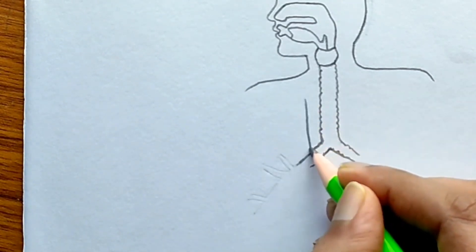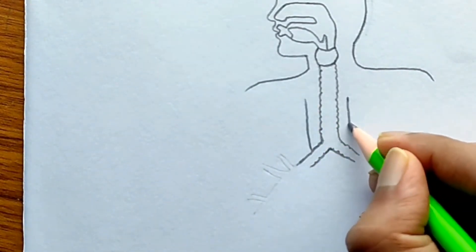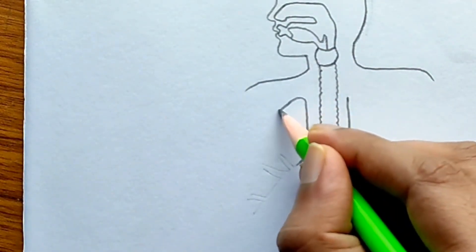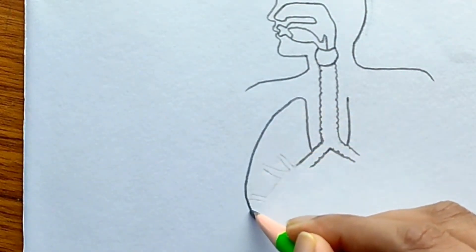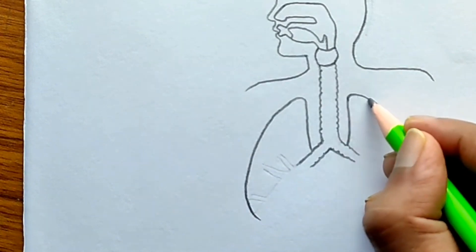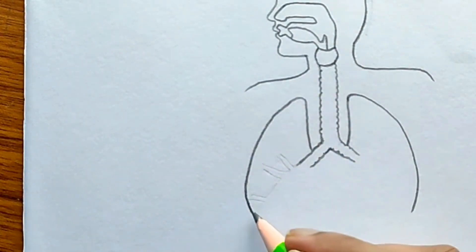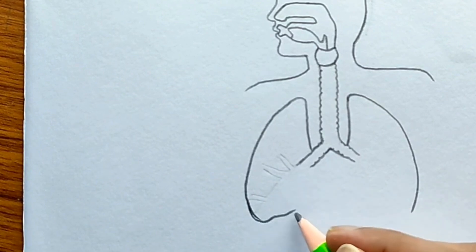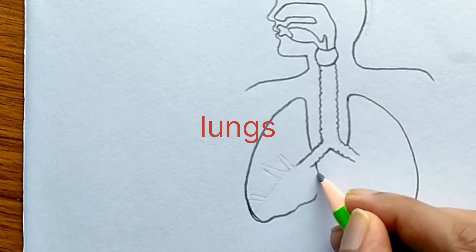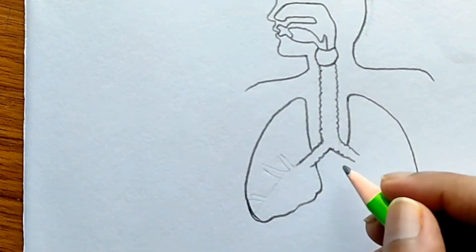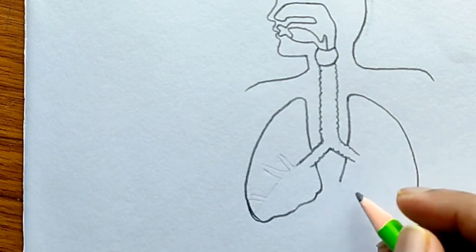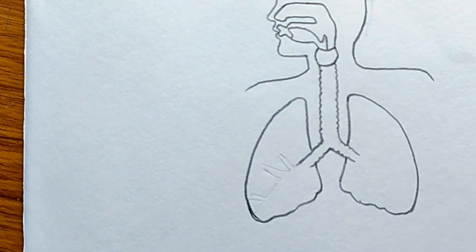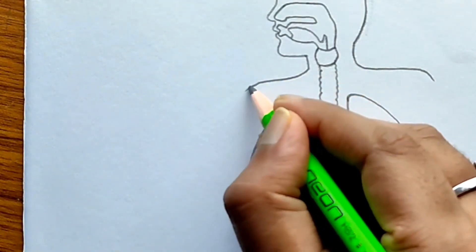The pharynx leads into the trachea, and the trachea is divided into bronchi. Each bronchus enters into the pair of lungs. We know a pair of lungs are present in the thoracic cavity, surrounded by what are called pleural membranes. I am drawing a pair of lungs surrounded by the pleural membrane.